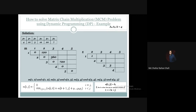Similarly, M45 represents A4 multiplied by A5, with k value 4. Calculating M45 = M44 + M55 + P3 × P4 × P5 = 0 + 0 + 12 × 20 × 7 = 1680. So the M table entry at position (4,5) is 1680, and S45 = 4.